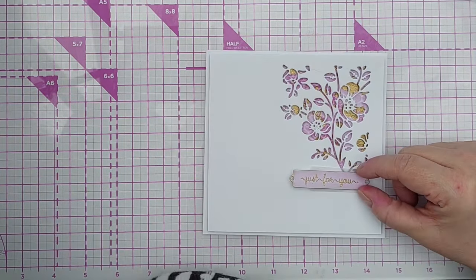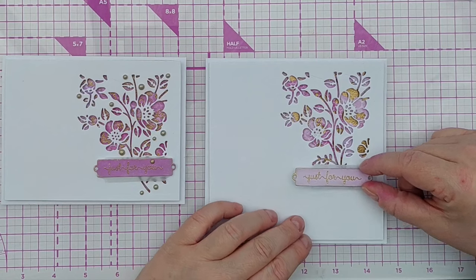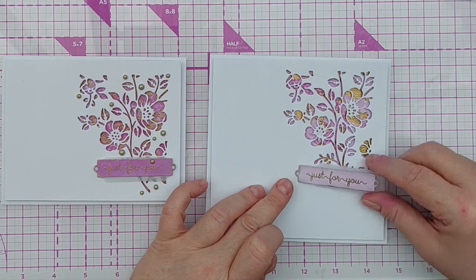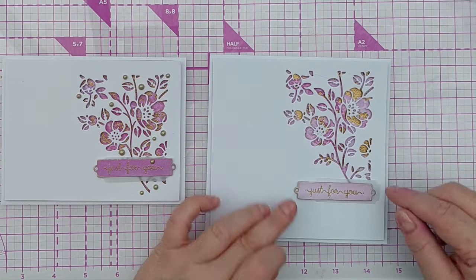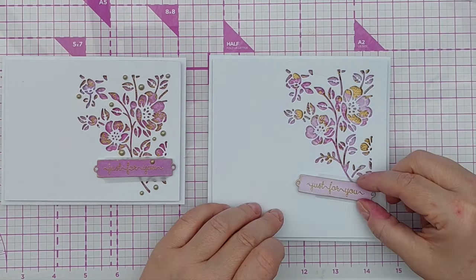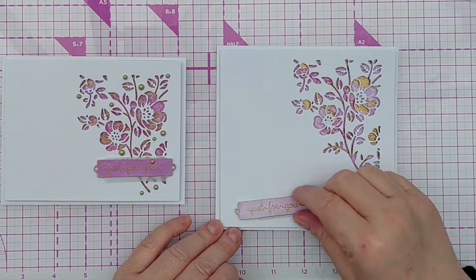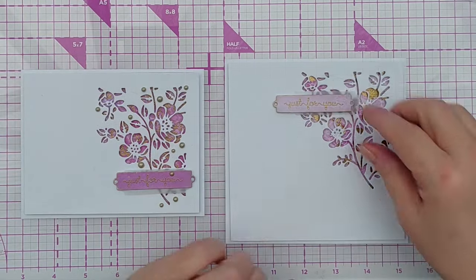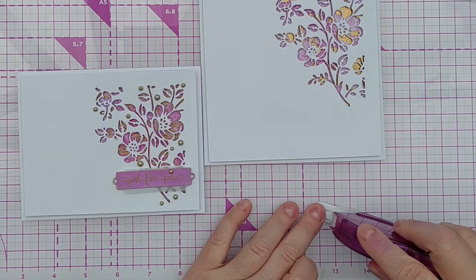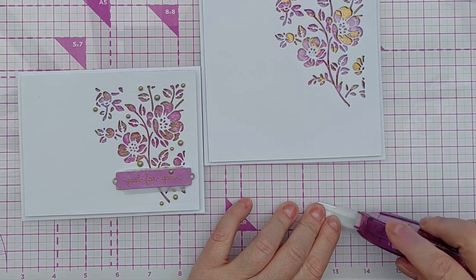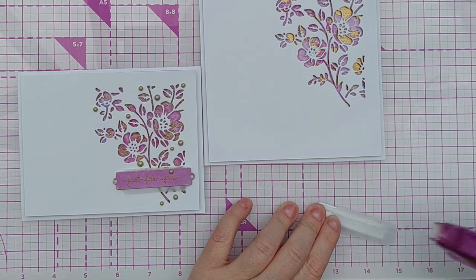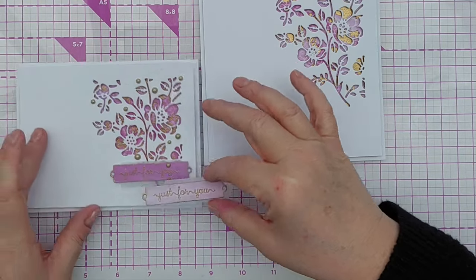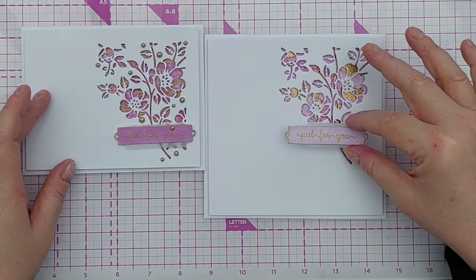Now where to put it. I think I might go for maybe there, I don't know if I want it coming... I think it needs to go a bit lower on this card, or higher. Could go up there. Yeah, I think I'll put it up there. I'm going to use my Crafter's Companion tape here because if I get any on the vellum it won't show through.